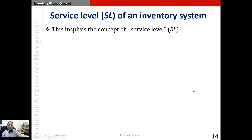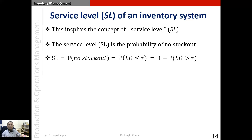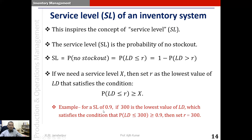This inspires the concept of service level: the probability of no stockout. Service level SL equals P(no stockout), which equals P(LD ≤ R), which equals 1 minus P(LD > R). If we need a service level X in our system, we must set R as the lowest value of LD satisfying P(LD ≤ R) ≥ X. For example, if we want a service level of 0.9, and 300 is the lowest lead time demand value where P(LD ≤ 300) ≥ 0.9, then we should set R equal to 300.